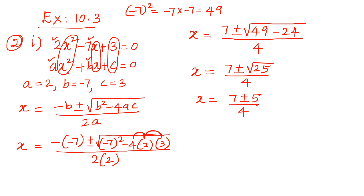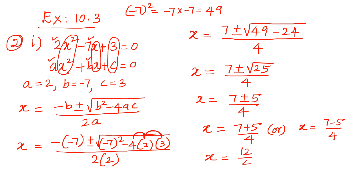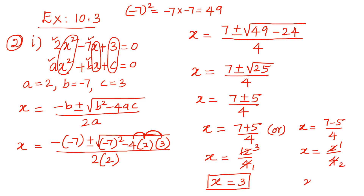Now we have 7 plus or minus 5, giving us two values of x. First: x = (7 + 5) / 4 = 12 / 4 = 3. Second: x = (7 − 5) / 4 = 2 / 4 = 1/2, since both 2 and 4 are divisible by 2. So the roots or solutions of the quadratic equation are x = 3 and x = 1/2.